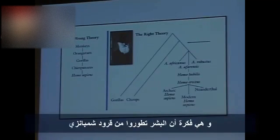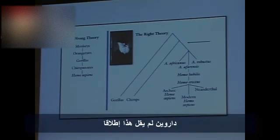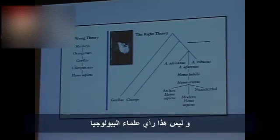Over on the left is what is the wrong theory — the idea that human beings descended from monkeys. Darwin never said that. That's not evolutionary theory. That's not what biologists believe.